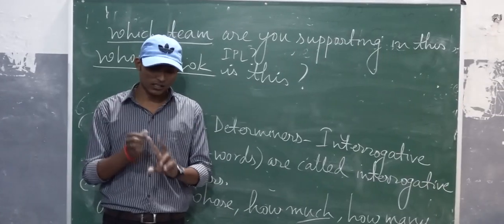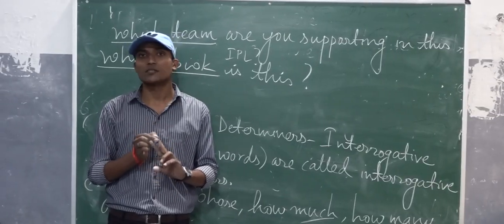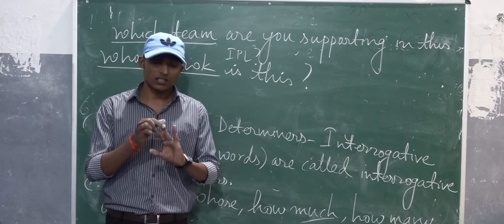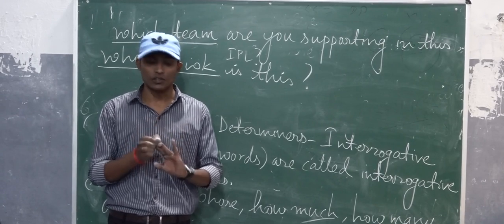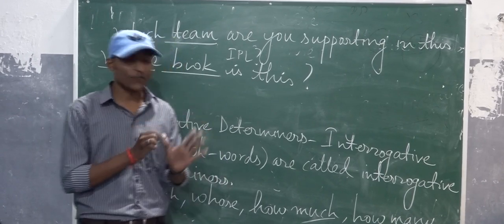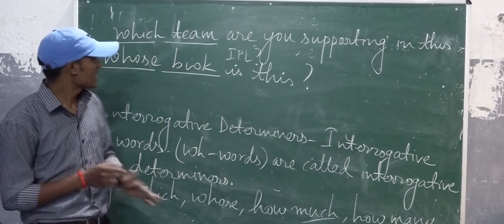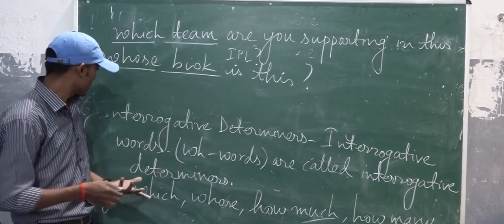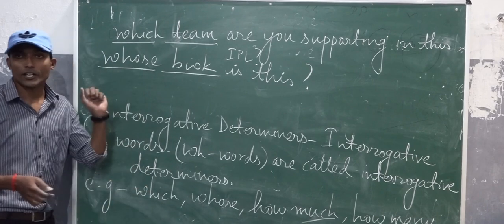The first is article, the second is possessive, the third is distributive, the fourth is demonstrative, the fifth is quantifiers, and the last one is interrogative.